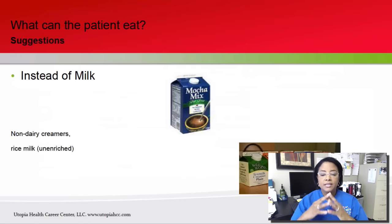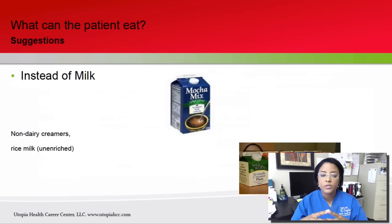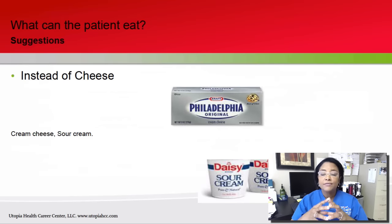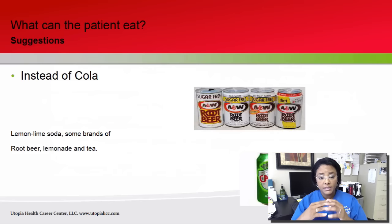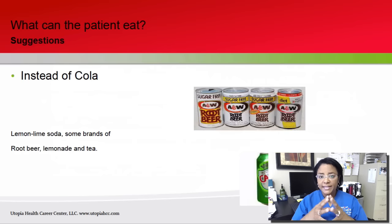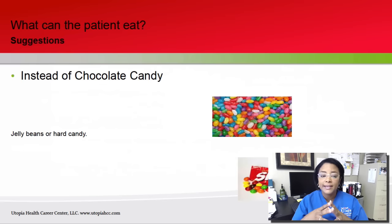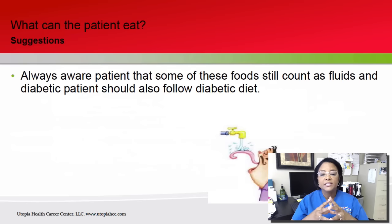Some food substitutions: instead of milk, patients can have non-dairy creamers or unenriched rice milk. Instead of cheese, they can have cream cheese or sour cream. Instead of cola, they can have lemon-lime soda, some brands of root beer, lemonade, tea, or ginger ale. Instead of chocolate candy, they can have jelly beans or hard candy. Always be aware that some of these foods still count as fluids, and diabetic patients should also follow a diabetic diet.